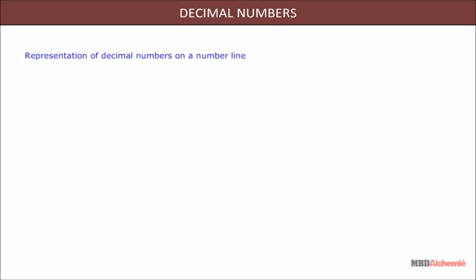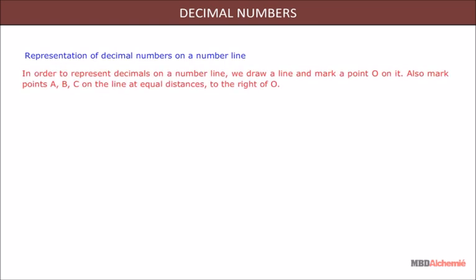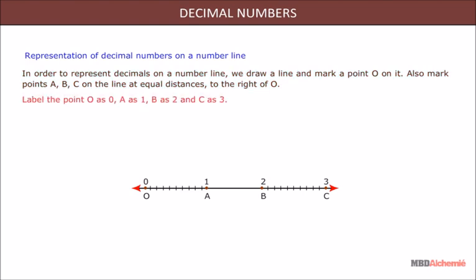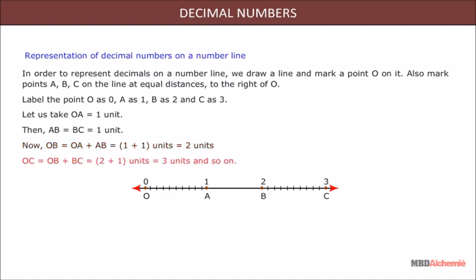Representation of decimal numbers on a number line. In order to represent decimals on a number line, we draw a line and mark a point O on it. Also, mark points A, B, C on the line at equal distances to the right of O. Label the point O as 0, A as 1, B as 2, and C as 3. Let us take OA equals 1 unit. Then, AB equals BC equals 1 unit. Now, OB equals OA plus AB equals 1 plus 1 units equals 2 units. OC equals OB plus BC equals 2 plus 1 units equals 3 units and so on.